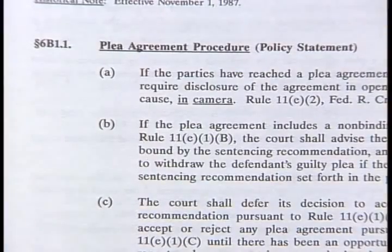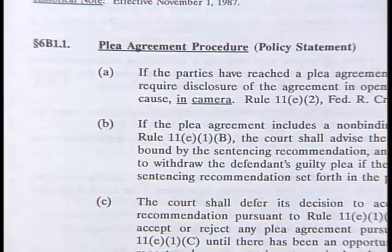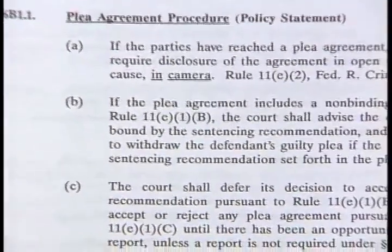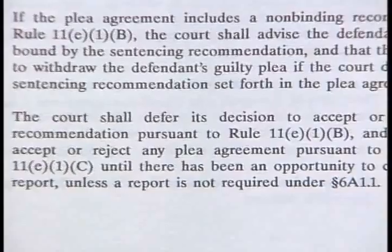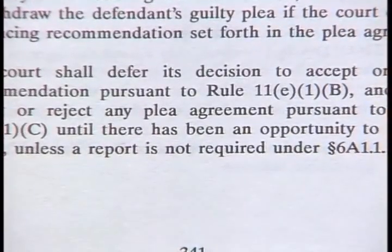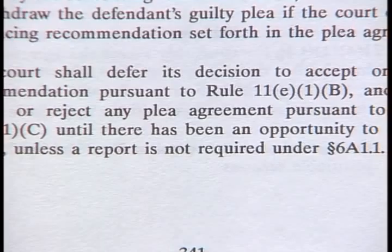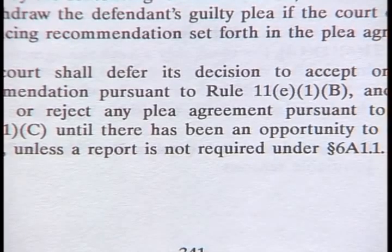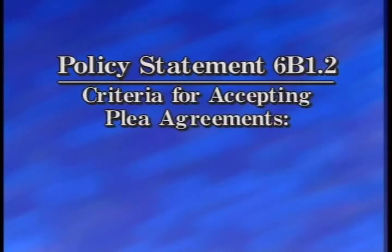They are found in Chapter 6 of the manual. Policy Statement 6B1.1C advises courts to defer acceptance or rejection of a plea agreement until there has been an opportunity to consider the pre-sentence report. And Policy Statement 6B1.2 contains criteria for determining whether to accept plea agreements.